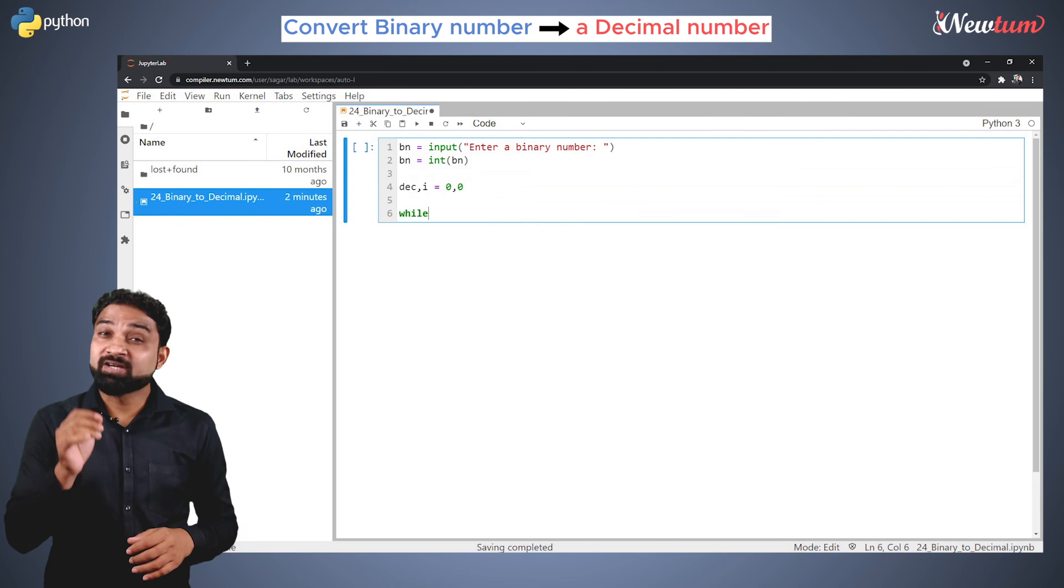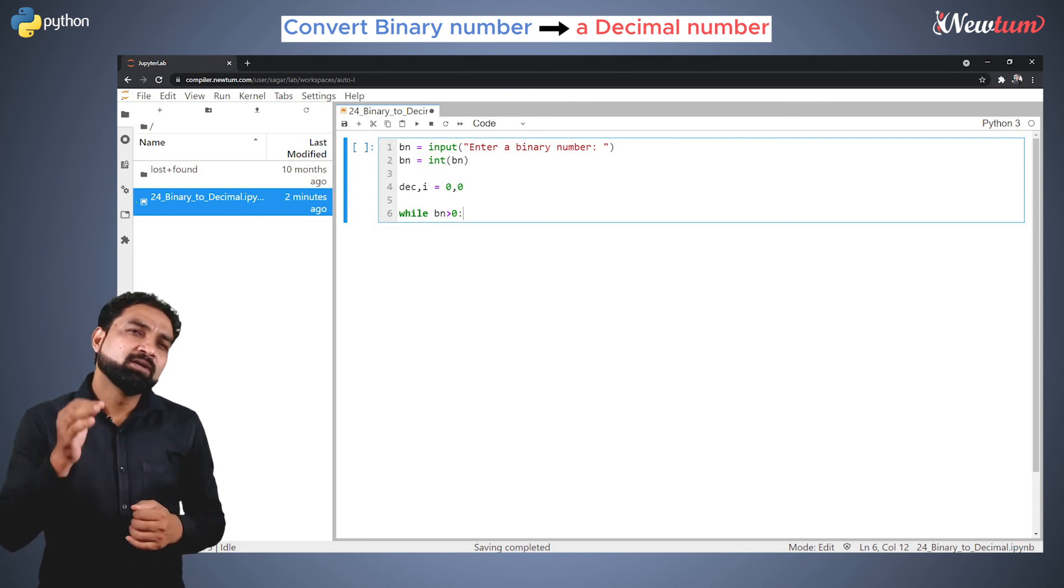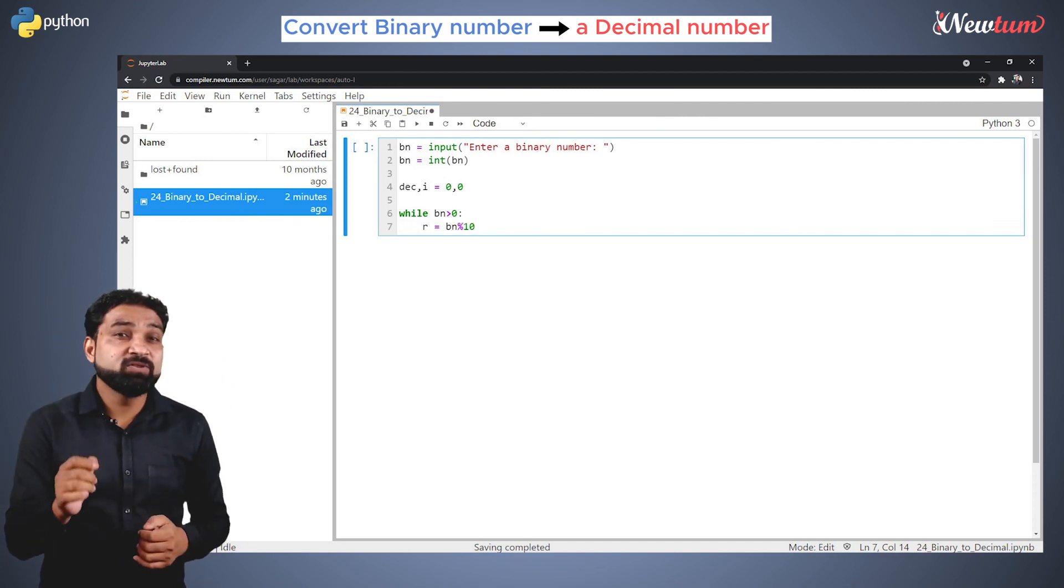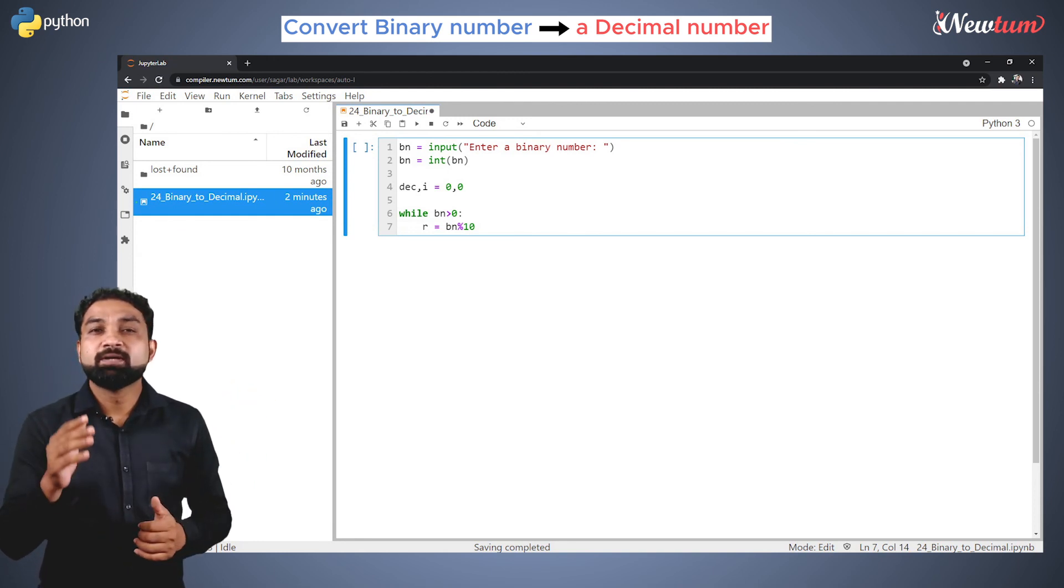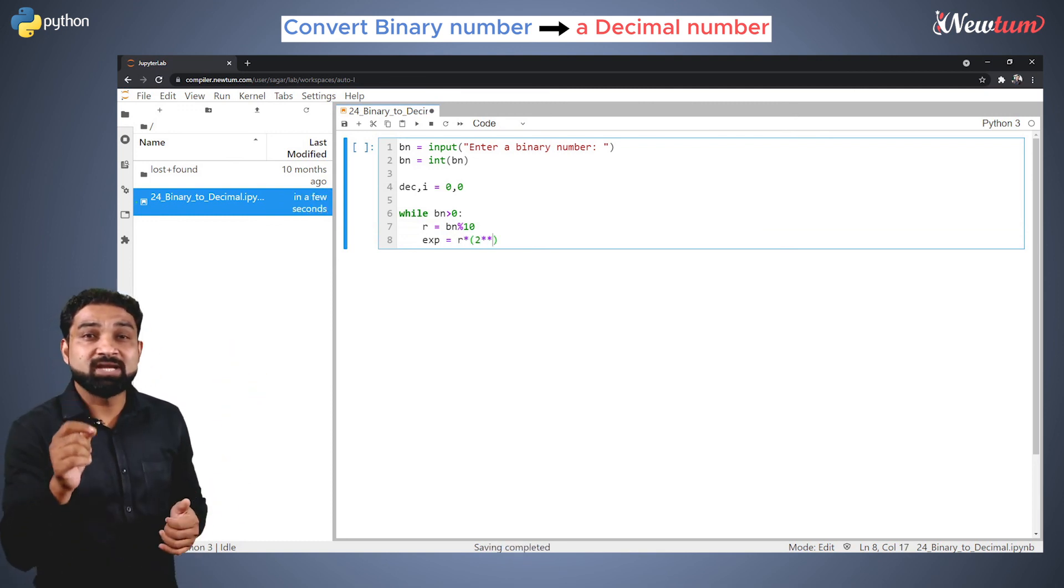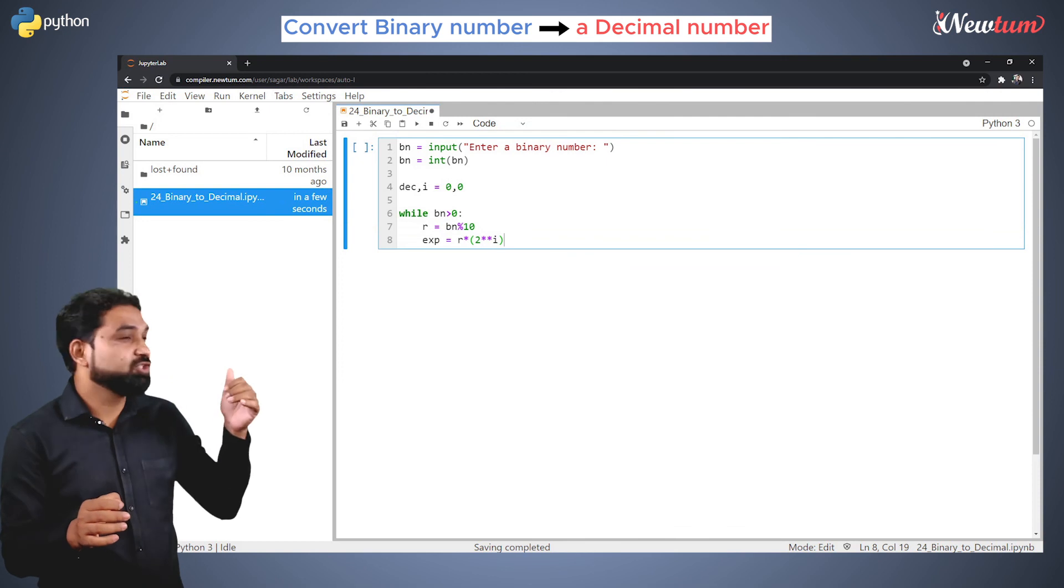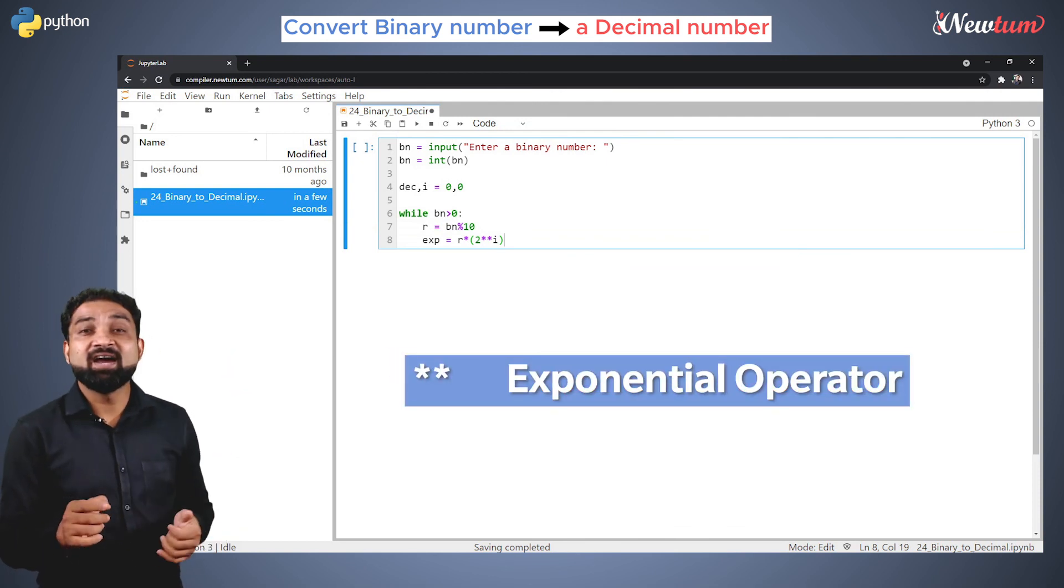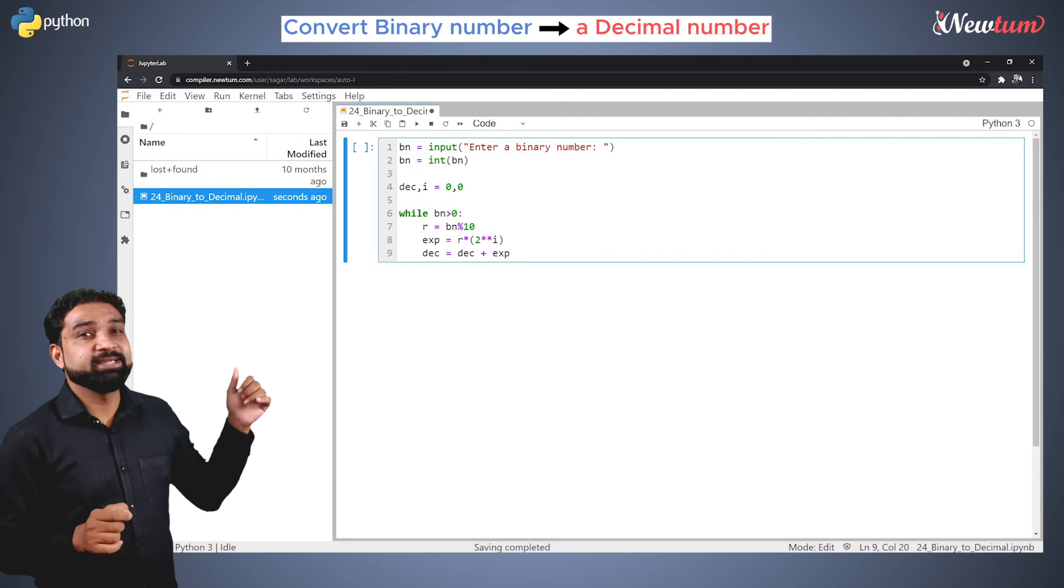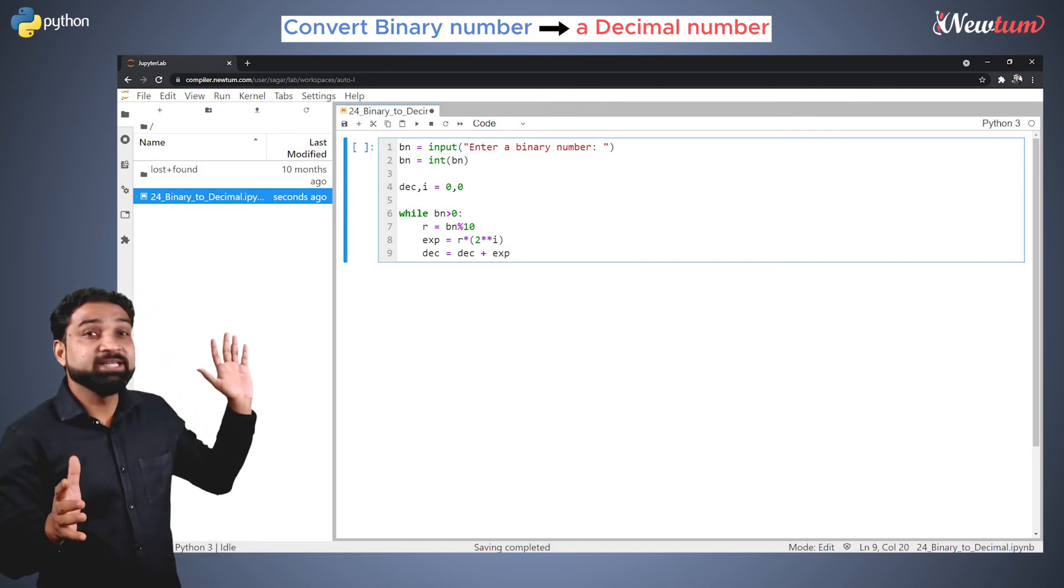Now write a while loop with condition bn greater than 0. Don't worry, we will explain this condition after completing the loop. Then write r equal to bn mod 10. This will give the last digit of the binary number. Then write exp equal to r into 2 star star i. Here we are multiplying the last digit with 2 to the power 0, and star star is the exponential operator. Then write dec equal to dec plus exp. This line will ensure that the result of each expression is added to the dec variable.